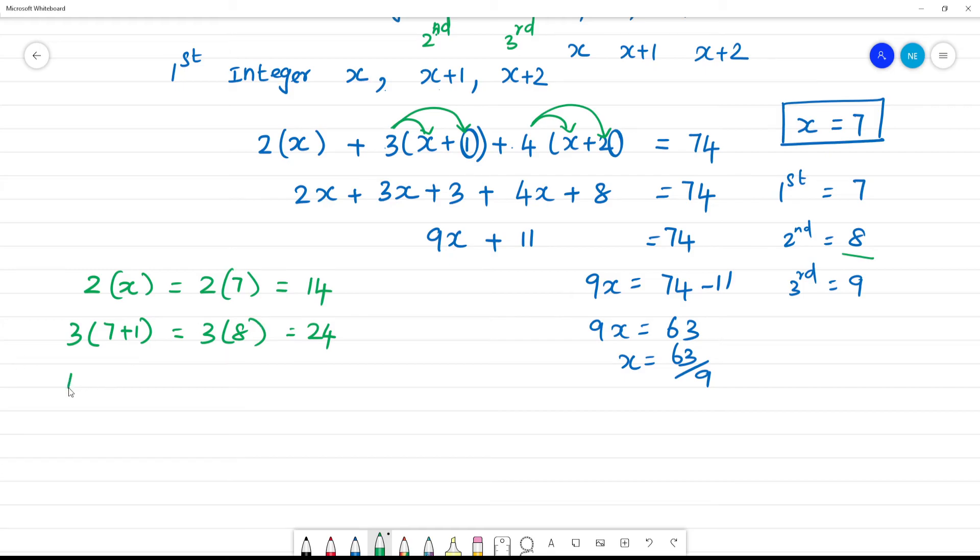The third integer: 4 into 7 plus 2, that equals 4 into 9, which is 36. Now if you add them: 14 plus 24 is 38, plus 36 equals 74. This is the check.